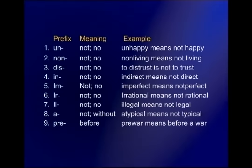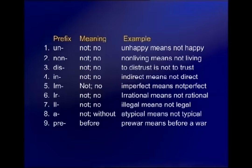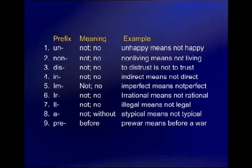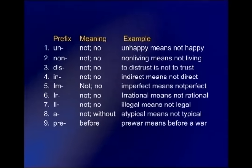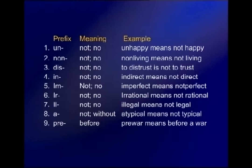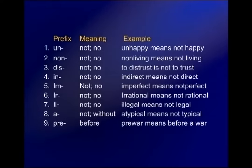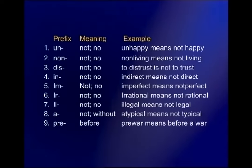We are going to look at around 25 prefixes. If you know the meanings of these prefixes, you will not have any problems finding the meanings of words. The first prefix is 'un', which means 'not' or 'no' — it is always negative. For instance, 'unhappy' means not happy. In the same way, the prefix 'non' (n-o-n) again means not or no — for example, 'non-living' means not living.